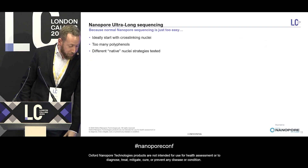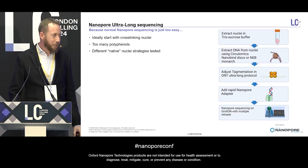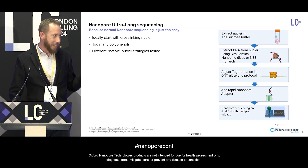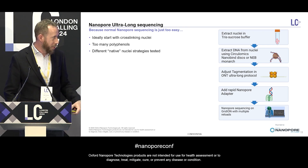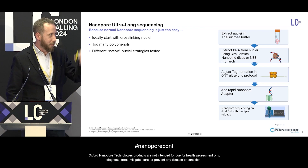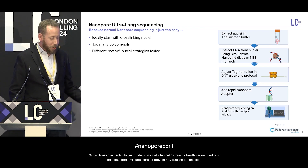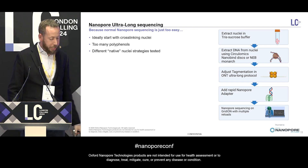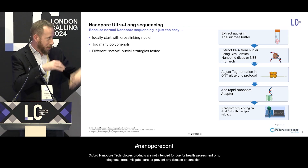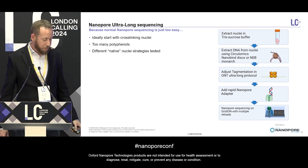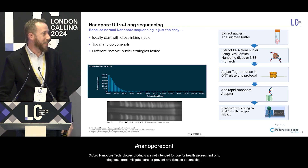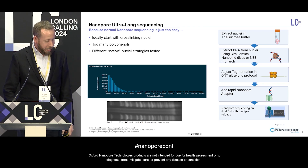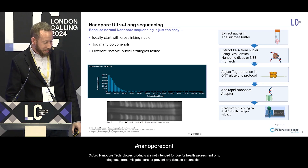But I promised ultra-long sequencing, because normal nanopore sequencing is just too easy. Normally you would start with cross-linking the nuclei, but that's not really an option in grapevine — the polyphenols would attack your DNA much faster than the formaldehyde could cross-link anything. So I had to work with native nuclei. I used the Circulomics Nanobind disks and adjusted a bit with the tagmentation enzyme. I thought it was going to be terrible, but I was pretty surprised when I looked at the size distribution — I really didn't expect those results. I hope we can soon repeat that, and I'm going to use it to improve the existing assembly.